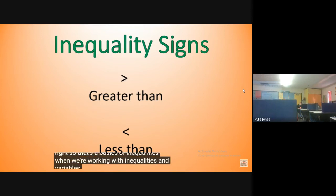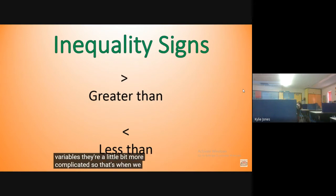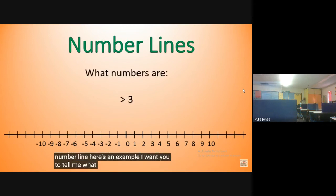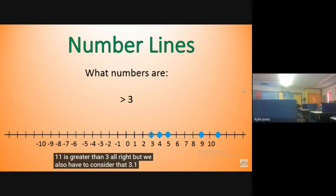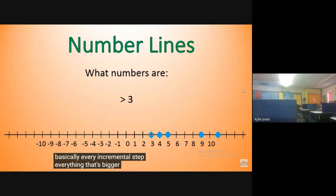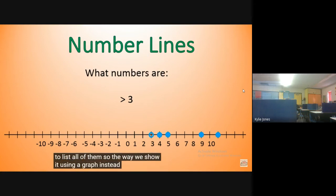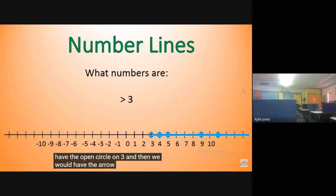When we're working with inequalities and variables, they're a little bit more complicated, so that's when we use a number line. Here's an example — what are the numbers greater than three? Four, five, nine, eleven — but also 3.1, three and a half, three and three quarters. Basically every incremental step bigger than three would be included. It's impossible to list all of them, so the way we show it using a graph is to draw an arrow. We would have an open circle on three, and then the arrow going to everything greater than three — everything to the right.